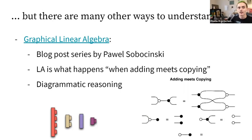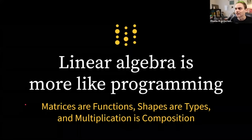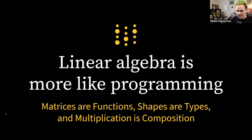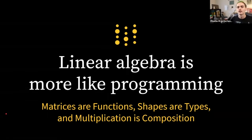Graphical linear algebra views linear algebra as what happens when adding meets copying, using diagrammatic reasoning rather than equational reasoning. It's completely rigorous — in some ways even more rigorous than the normal approach. But for folks who work with software and hardware, I think the right way to think about linear algebra is that it's more like programming: matrices are functions, shapes are the types of data, and multiplication is function composition.